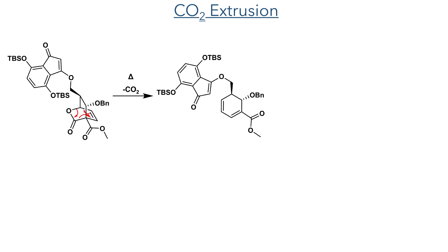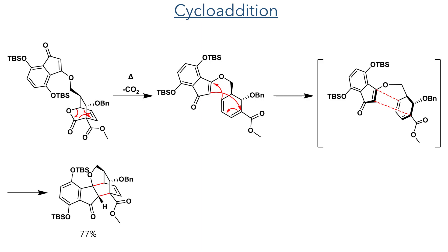With this formed, they then carried out the intramolecular cycloaddition. Heating the compound to 140°C promotes the extrusion of carbon dioxide, leading to the formation of a cyclic diene. This rapidly undergoes an intramolecular Diels-Alder reaction with the enone and completes the formation of the polycyclic framework in a 77% yield. This reaction produced only a single isomer, as the approach of the dienophile was determined by the stereochemistry of the carbon within the cyclohexadiene ring.